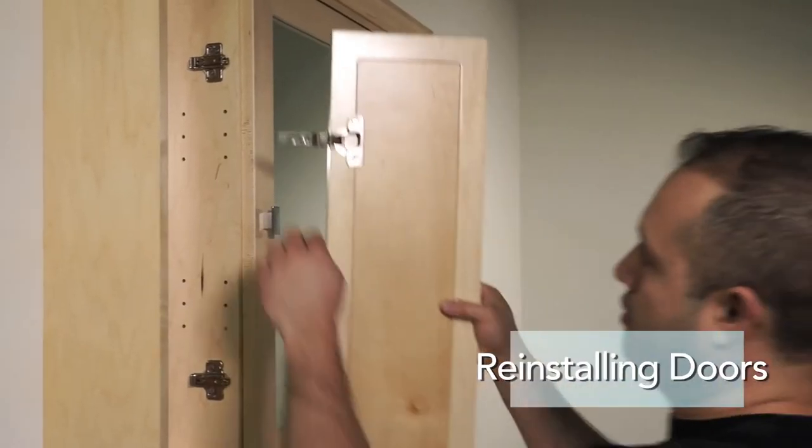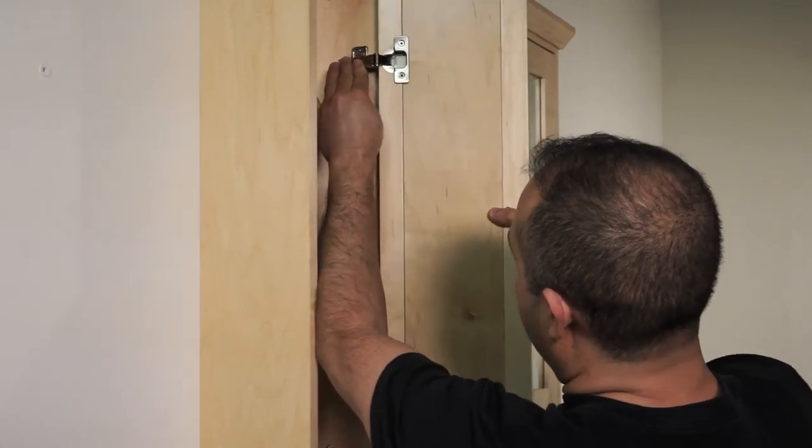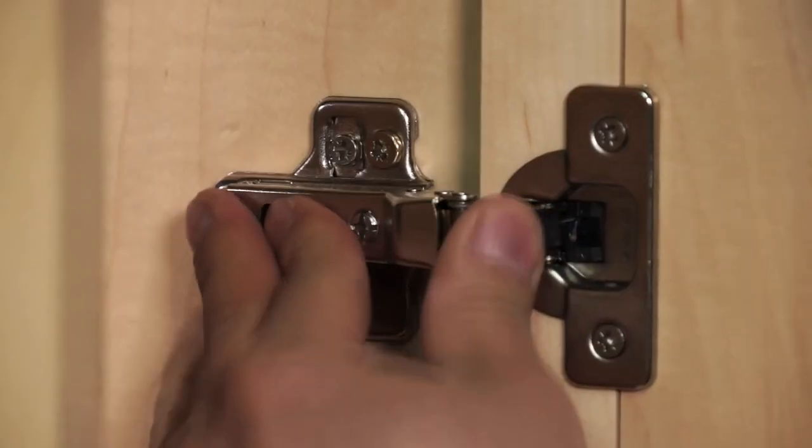To reinstall doors, position the lugs on the mounting plate next to the J-hooks beneath the arm. Then press the end of the arm to engage the catch.